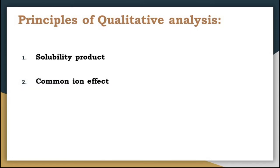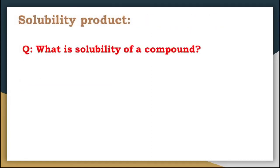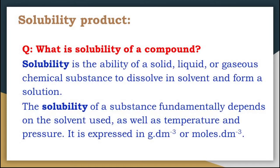Now we will focus on one of the principles of qualitative analysis: solubility product. Solubility is the ability of a solid, liquid, or gaseous chemical substance to dissolve in a particular solvent and form a solution. The solubility of a substance fundamentally depends on the solvent used, as well as the temperature and pressure applied. Solubility is expressed in grams per dm³ or moles per dm³.